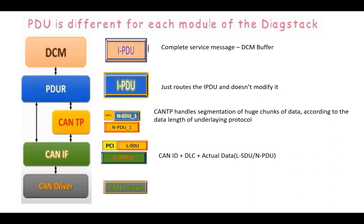CANTP handles segmentation of large data according to the data length of the underlying protocol. The IPDU when it comes to CANTP is called NSDU, and CANTP adds PCI to it, so NPCI plus NSDU is together called NPDU. When CANTP forwards this NPDU to the CAN interface layer, it is called LSDU. PCI is added to the LSDU and the total is called LPDU. The total content of this LPDU is the CAN identifier, the DLC, and the actual data — that is the LSDU or NPDU. This LPDU is added as data to the CAN frame and forwarded via bus to the tester.